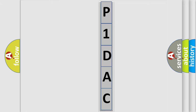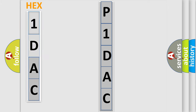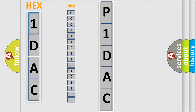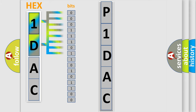The error code is split into two bytes consisting of 16 bits. One bit is the basic unit that each computer works with. The bit has two logical states: zero (low level) and one (high level). By combining the first two bits, the basic character of the error code is expressed.